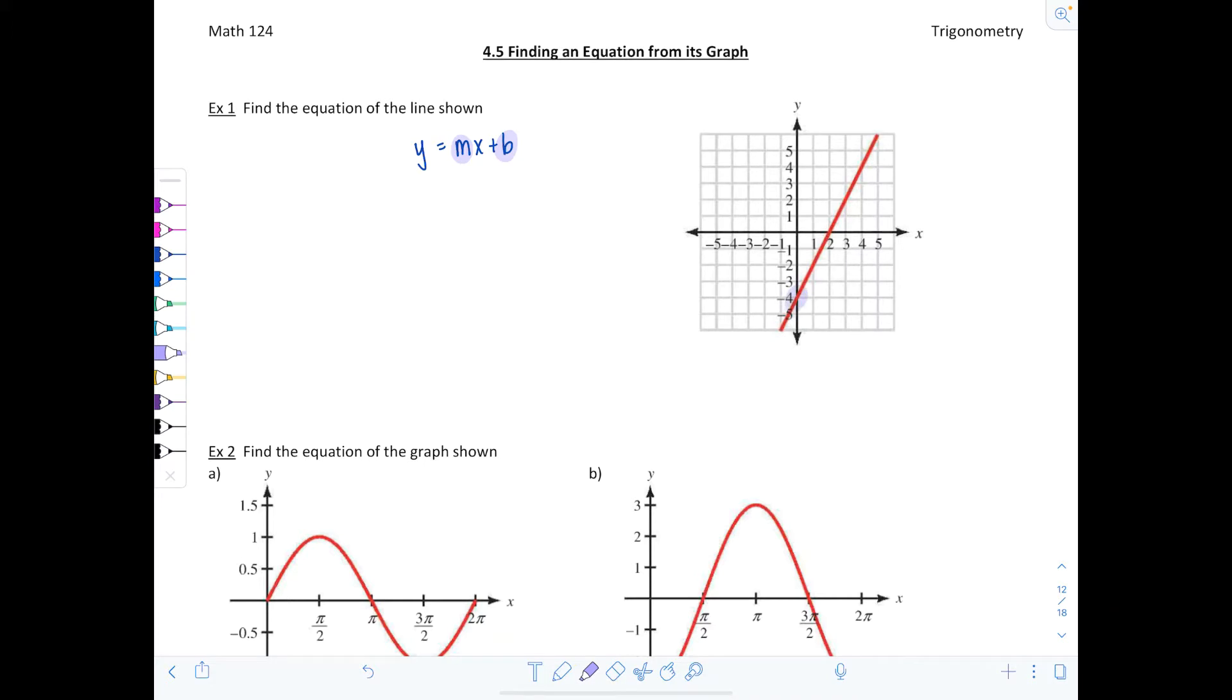Well, sure. B is the y-intercept. So I can see that the graph crosses the y-axis at negative 4. And then M is the slope, which we know is the change in y over change in x. And we can think of that as rise over run. And so I can just count using a couple points on the graph. We go up 4 over 2. So it looks like the slope is 4 over 2, which is 2.